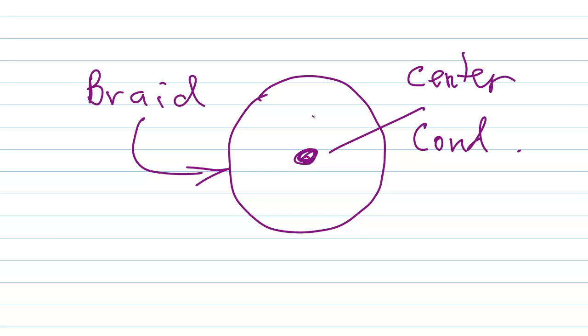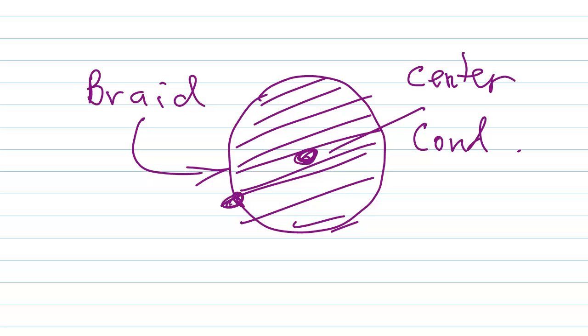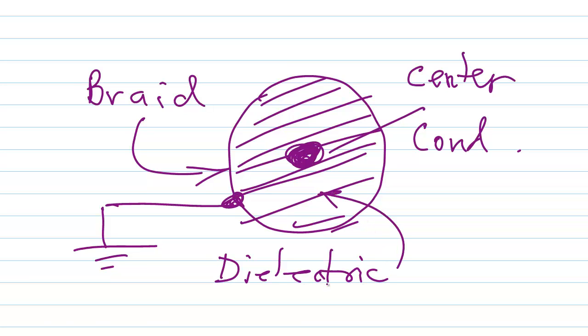And then there are these conductors, the outer conductor which is typically grounded by the way, and the center conductor which carries the signals is separated by this dielectric. Dielectric basically means a material that separates two electric poles and keeps them apart. Usually that material is polyethylene.